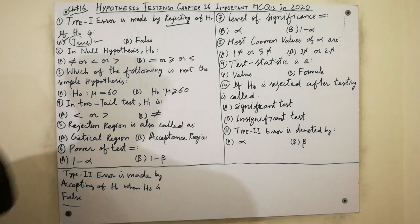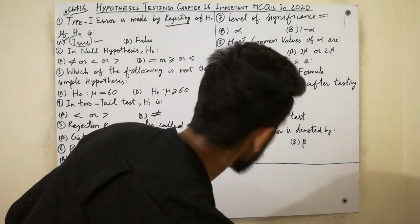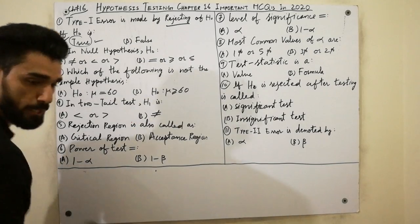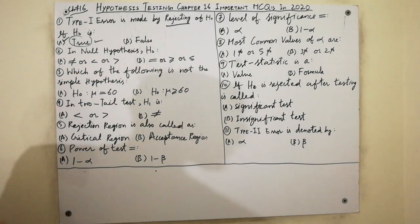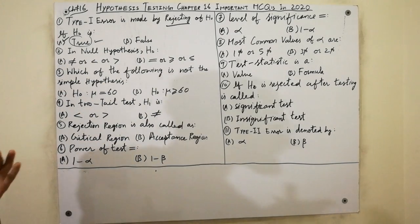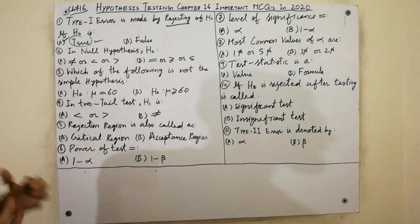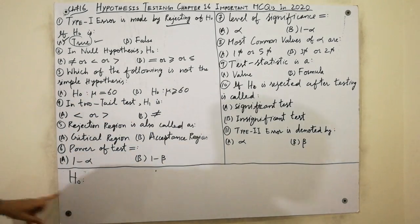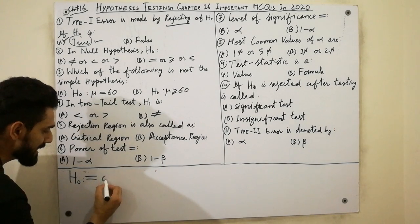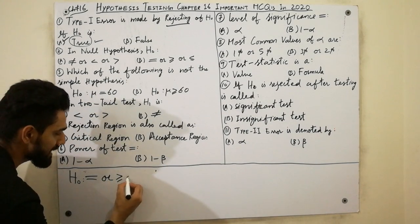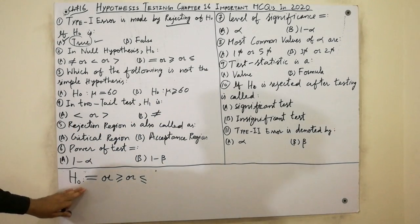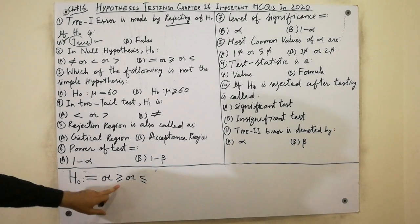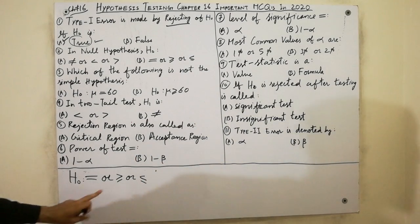The second MCQ is also very important. This concerns the null hypothesis. In the null hypothesis, H-naught uses the signs: equal, greater than or equal, or less than or equal. These signs are called the null hypothesis signs. Must remember that key point.